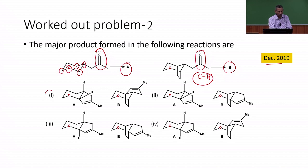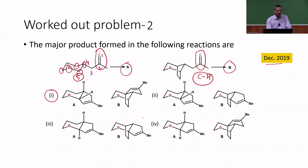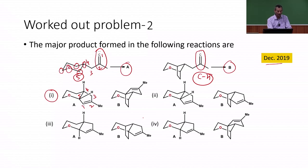Looking at the first carbene: if we number from the carbene carbon as 1, then positions 2, 3, 4, and 5 follow. A 1,5-cyclization or C–H insertion is possible, where the methyl unit is on the second carbon. The carbene can form a bond with C5 to give a 5-membered ring product in a 1,5 C–H insertion.